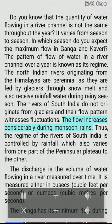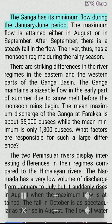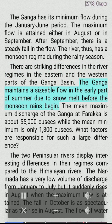The discharge is the volume of water flowing in a river measured over time, measured either in cusecs (cubic feet per second) or cumecs (cubic meters per second). The Ganga has its minimum flow during the January–June period; the maximum flow is attained either in August or September, after which there is a steady fall. The Ganga maintains a sizable flow in early summer due to snowmelt before the monsoon. The mean maximum discharge of the Ganga at Farakka is about 55,000 cusecs, while the mean minimum is only 1,300 cusecs.